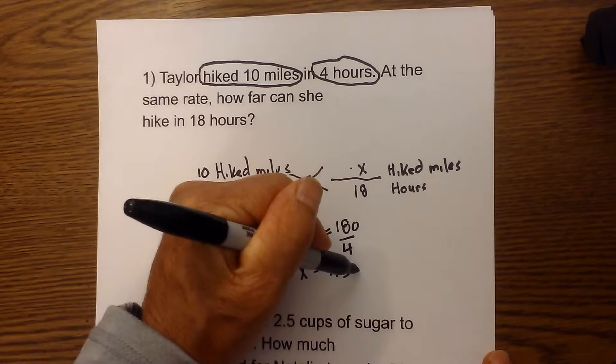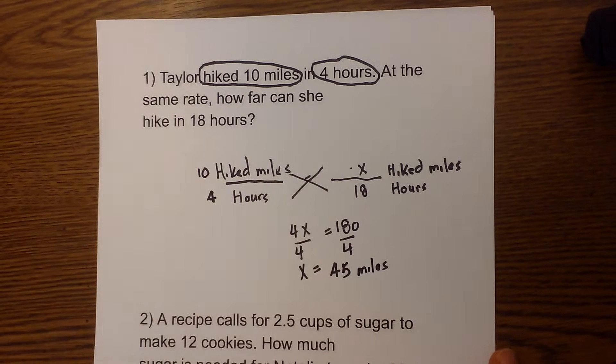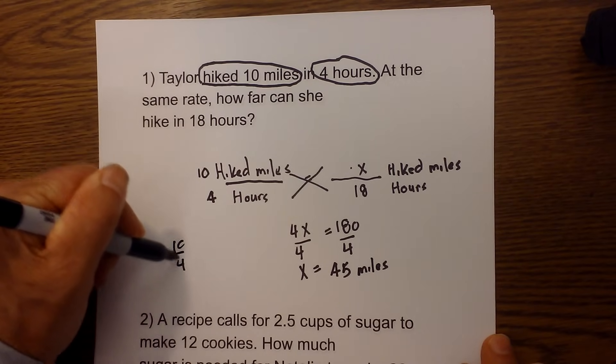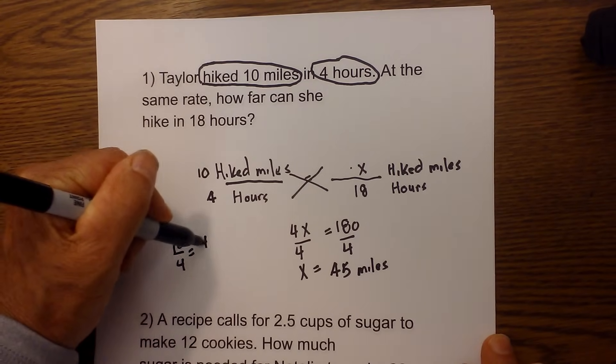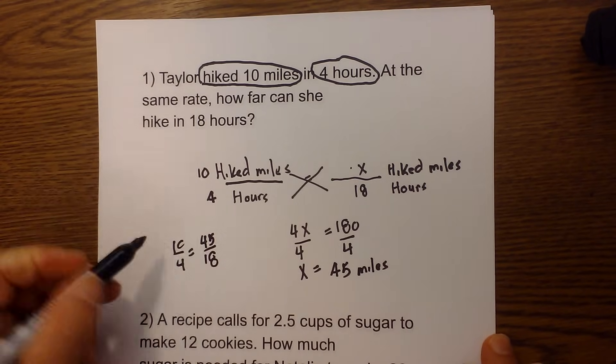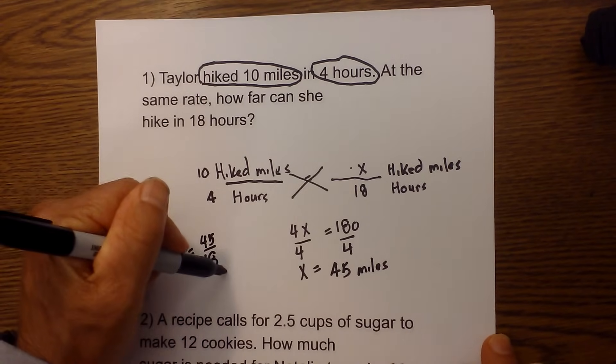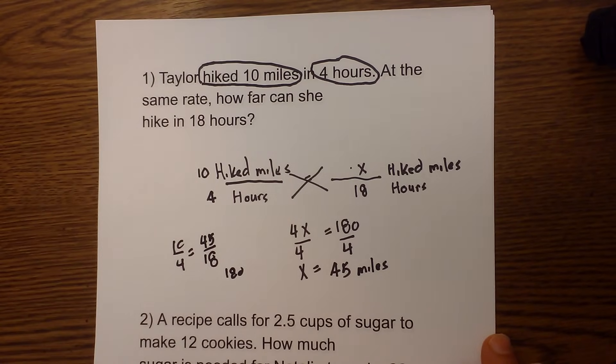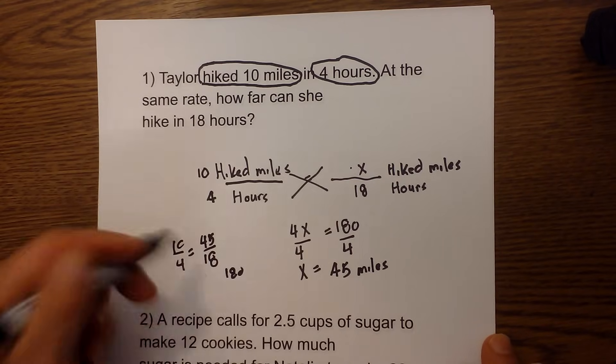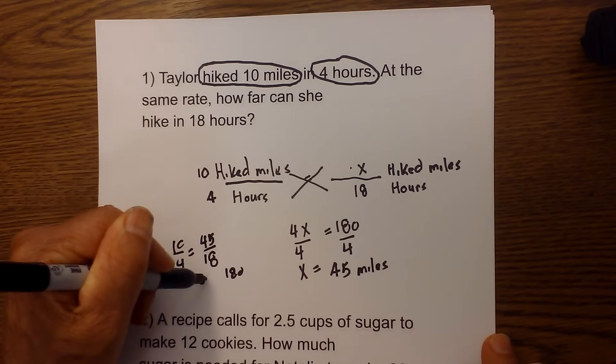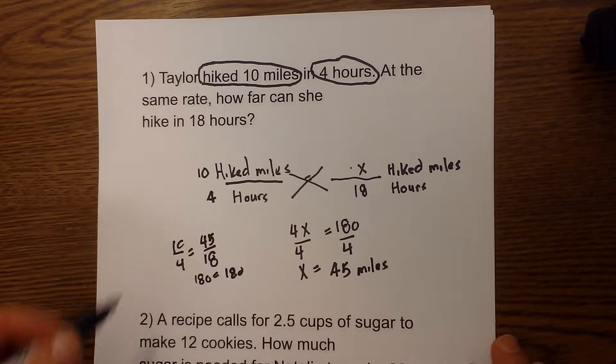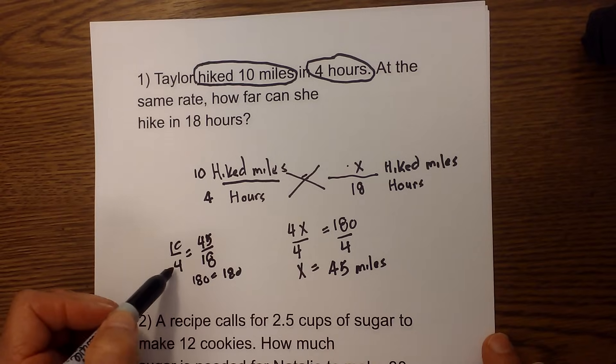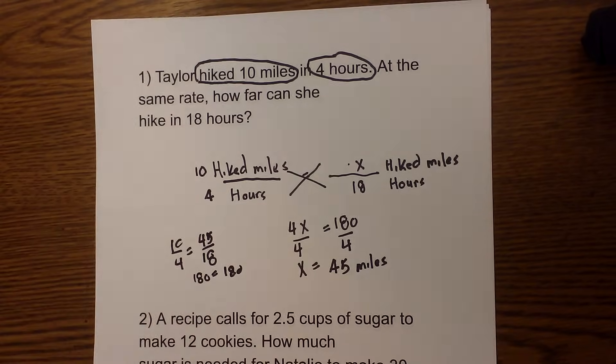180 divided by 4 is 45, so let's put in our unit of measure—he hiked 45 miles. Now to check our work, let's quickly put it into a cross product. So we have 10 over 4 equals 45 over 18. 10 times 18 is 180, and 45 times 4 is also 180, so this solution is correct. This last step I'm just checking to make sure my answer is right.